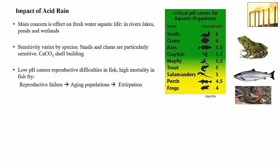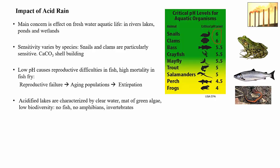With low pH, there is also reproductive failure in fish in acidified lakes. Fish eggs can't develop properly, so acidified lakes tend to be characterized by an aging population — only older or larger fish. Eventually these fish die off, leading to extirpation, which is the local extinction of a species — for example, you no longer have trout in a lake because the pH has fallen too low. Acidic lakes are characterized by clear water — no zooplankton — a mat of green algae, and generally low biodiversity: no fish, amphibians, or invertebrates.